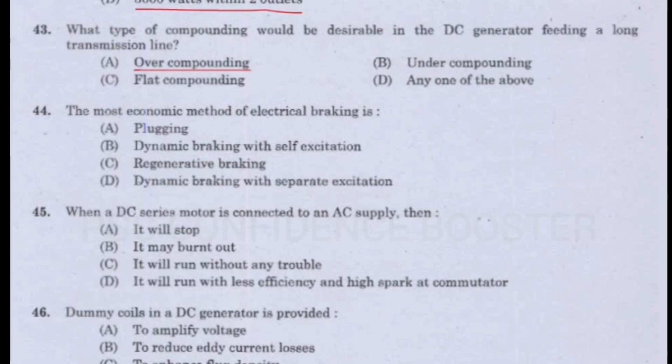Question number 44. The most economic method of electrical braking is: Option A - Plugging. Option B - Dynamic braking with self-excitation. Option C - Regenerative braking. Option D - Dynamic braking with separate excitation. Answer is Option C: Regenerative braking.